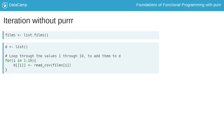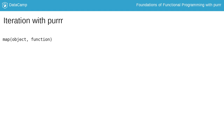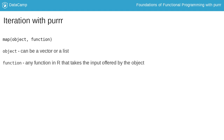Purrr makes iteration easy. It wraps a for loop into a single function, map, which reduces the number of lines of code we need. This means we can focus on the important pieces of what we are trying to accomplish. Instead of worrying about indexing and brackets or curly braces, we can just put in the pieces and get what we need.